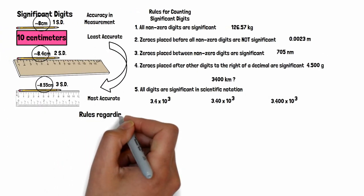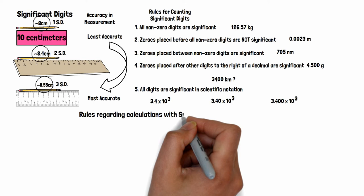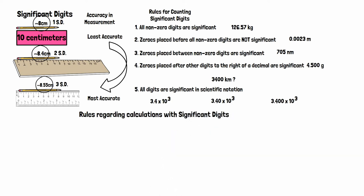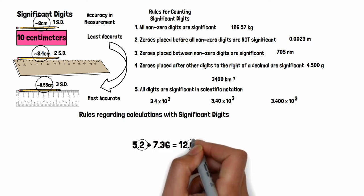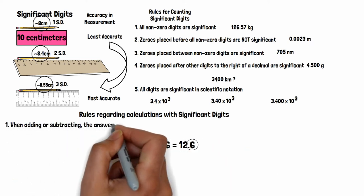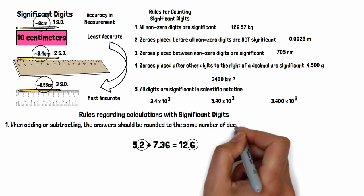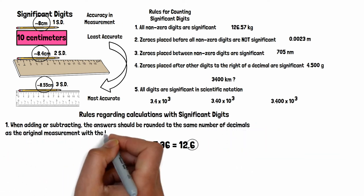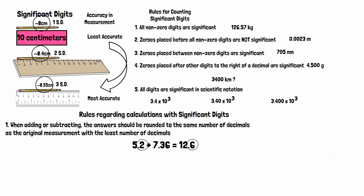Lastly, let's go over the rules for rounding after making calculations with measurements. When adding or subtracting, we look at the number of digits after the decimal. In this example the first measurement has one digit after the decimal and the second has two. So our answer can only have one since it is only as accurate as our least accurate measurement.